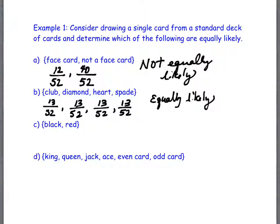Black. How many black cards are there? Twenty-six out of fifty-two. And how many red? Twenty-six out of fifty-two. Are these equally likely? Yeah. These are equally likely.